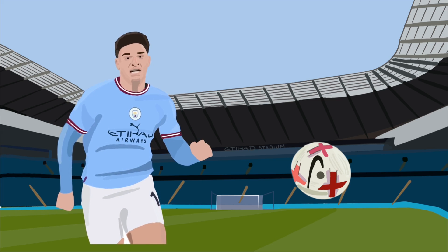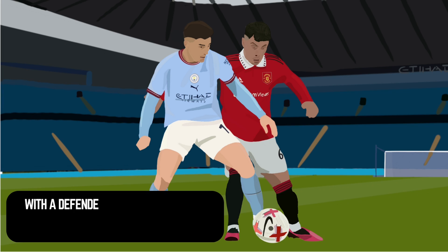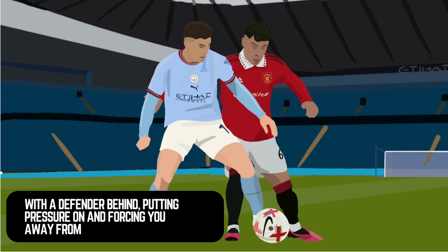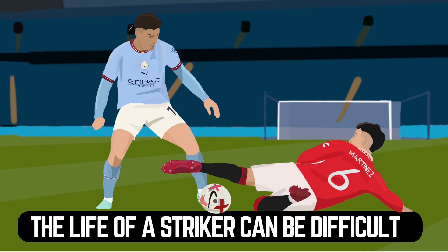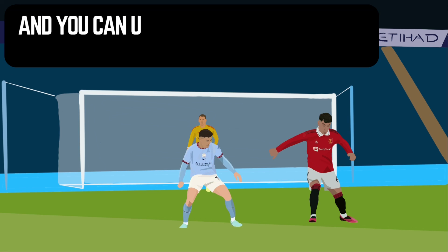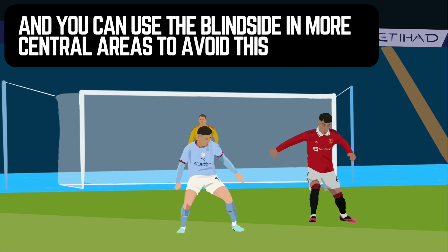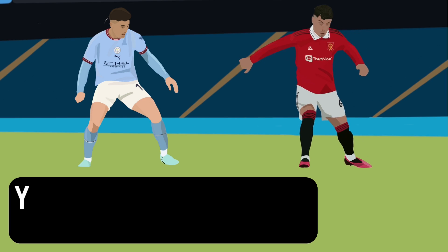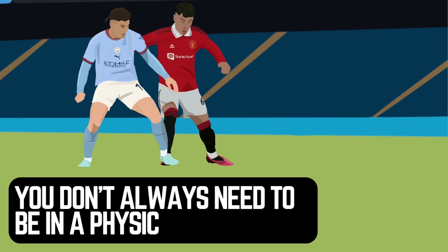It gets them in a better position to go out and be effective. Now, for any striker or any attacking player, it's always difficult where there's a defender behind putting pressure on and forcing you away from goal. The constant physical challenges can be tiring and at some points demoralising. You want to get on the ball and show people what you can do. But you can use the blindside to get out of these situations, even when you're in central areas of the pitch, because you don't always need to be in a physical battle with the defensive player.